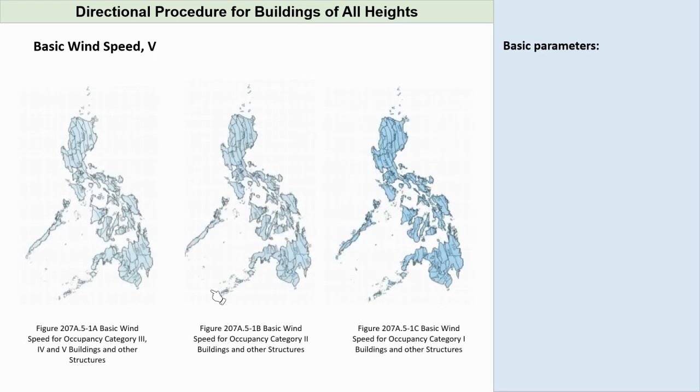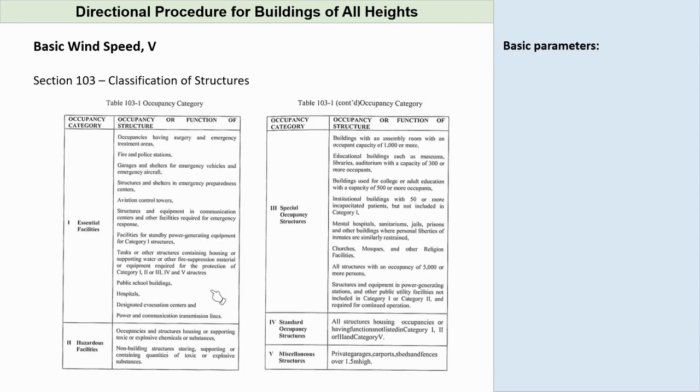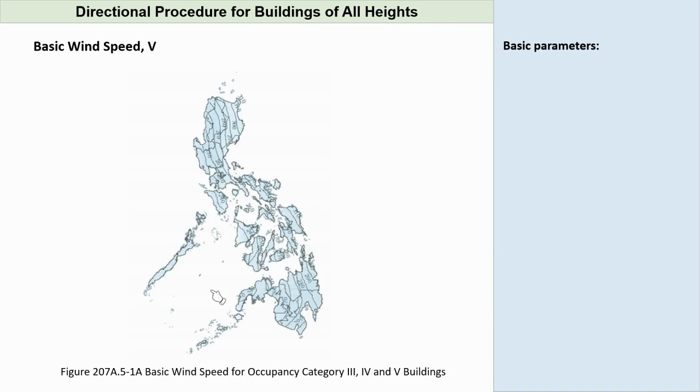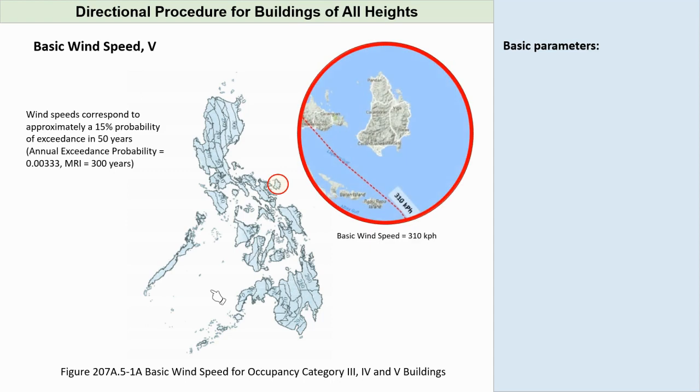Now we define first what is the basic wind velocity in our location. The code provides three wind contour maps divided by categories. The first map is for occupancy categories 3, 4, and 5, second for category 2, and the third for category 1. In our case, since we are under category 4, standard occupancy, we'll use the first map. Wind speeds in this map correspond to approximately a 15% probability of exceedance in 50 years, mean return interval of about 300 years. The project site is located in the southeastern part of Luzon. Looking closely at the map, we can see the basic wind speed anywhere within the island is about 310 kilometers per hour, or 86.11 meters per second.